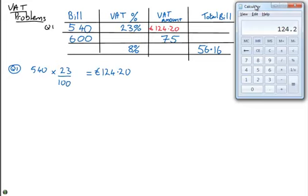And then the total amount is, so you just have to add that to the 540. And we get a total amount of €664.20. So that would be a total bill amount of €664 and 20 cent. Now, that's type one. The first type of question where you're just given the VAT rate and the bill amount, and you're asked to work out the two quantities.